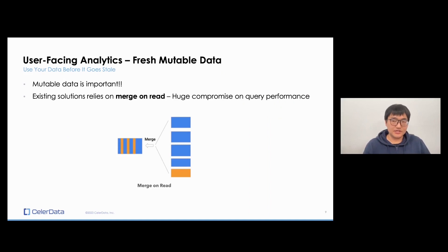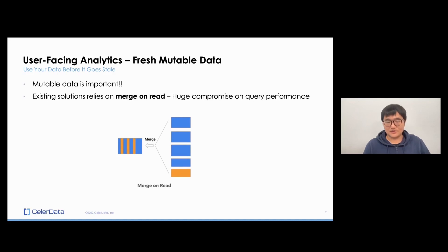Let's take a social media platform — the one that does the ads thing, for example. If you're an advertiser looking at data that's five minutes old, that's not good. Because every second you're running ads, you're paying money. If it's not working well, you want to know the result as soon as possible. This is why freshness is important.